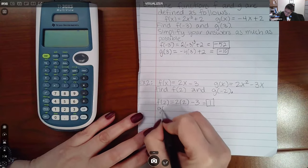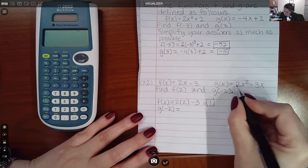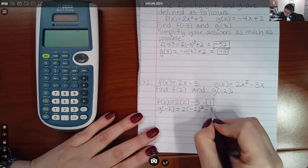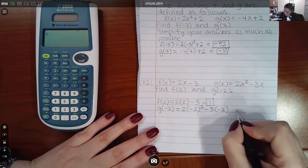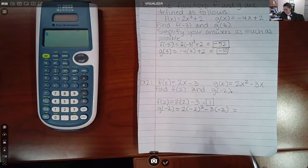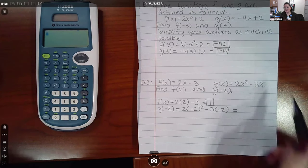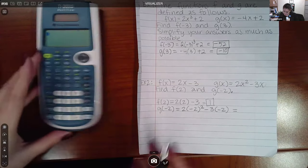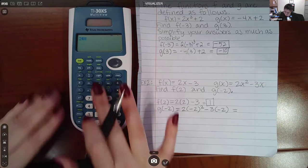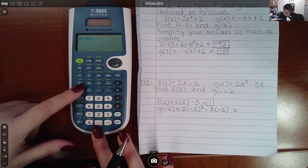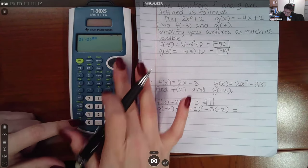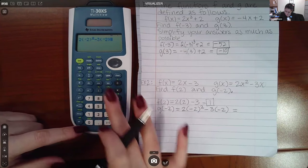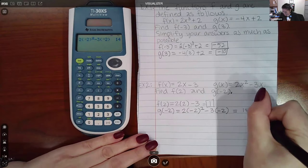When I go to find g of negative 2, I'm taking this expression, and I'm replacing all the x's, because x does appear more than once, with that negative 2. So all the x's, this one and this one, both get replaced with a negative 2. And then this one I am going to use a calculator. So 2 parentheses negative 2, raise to the second power, minus 3 parentheses negative 2. And so then I get 14.